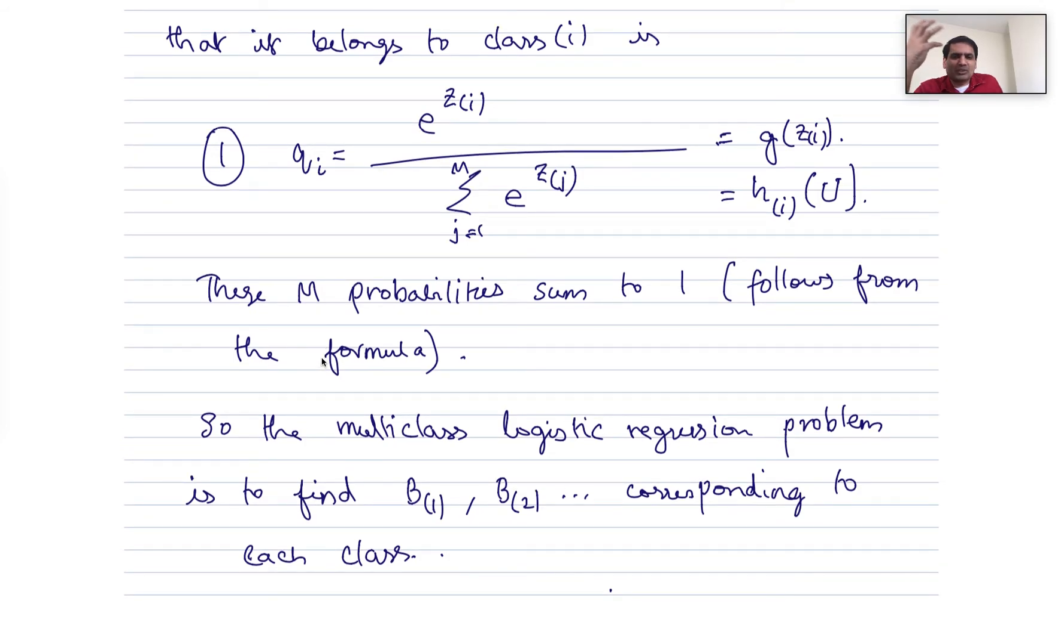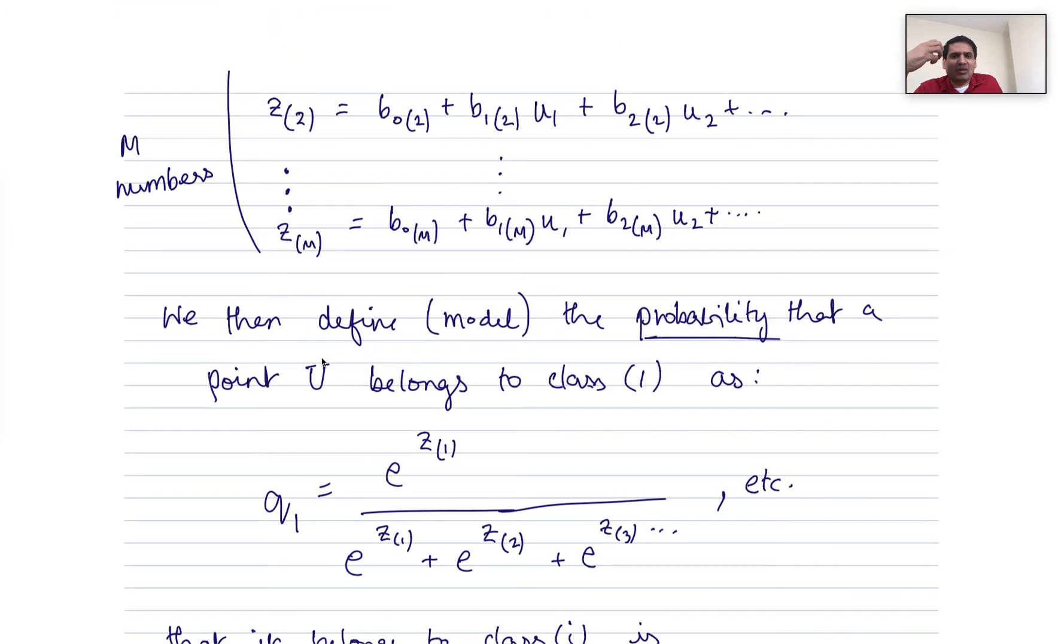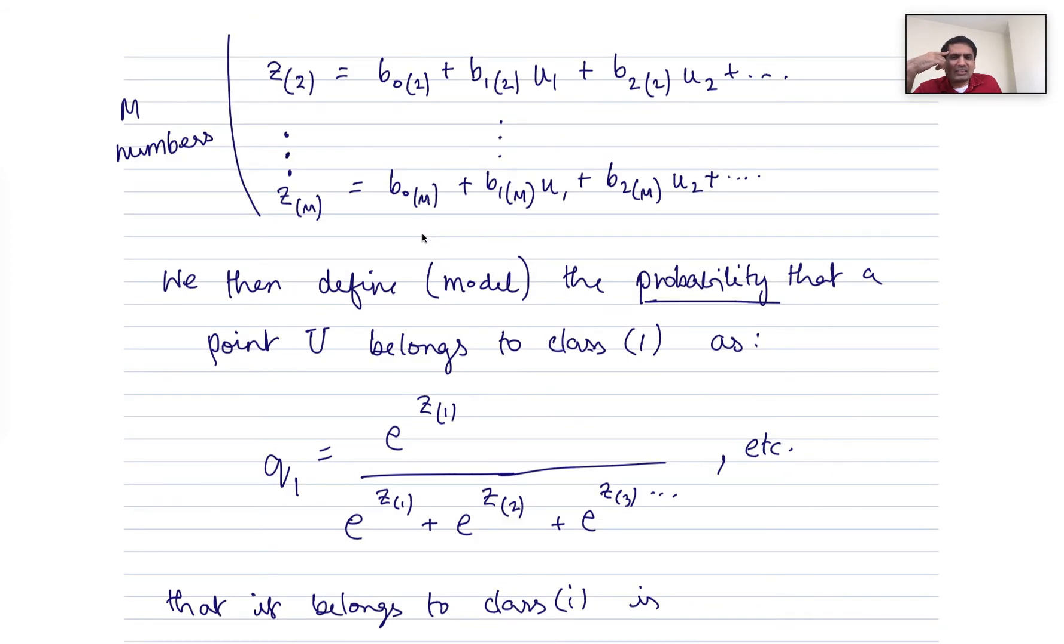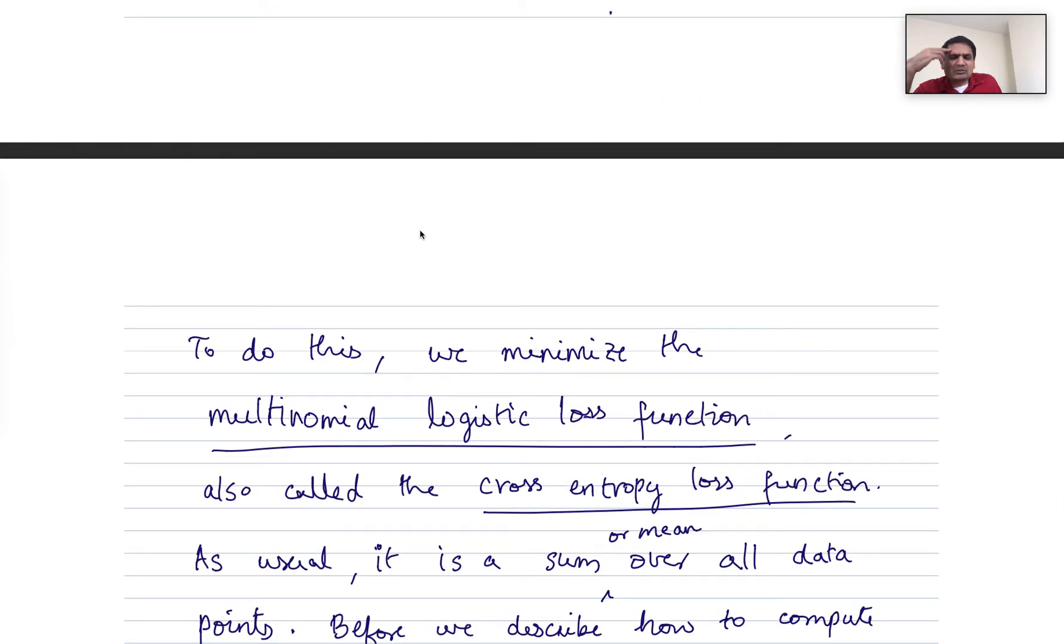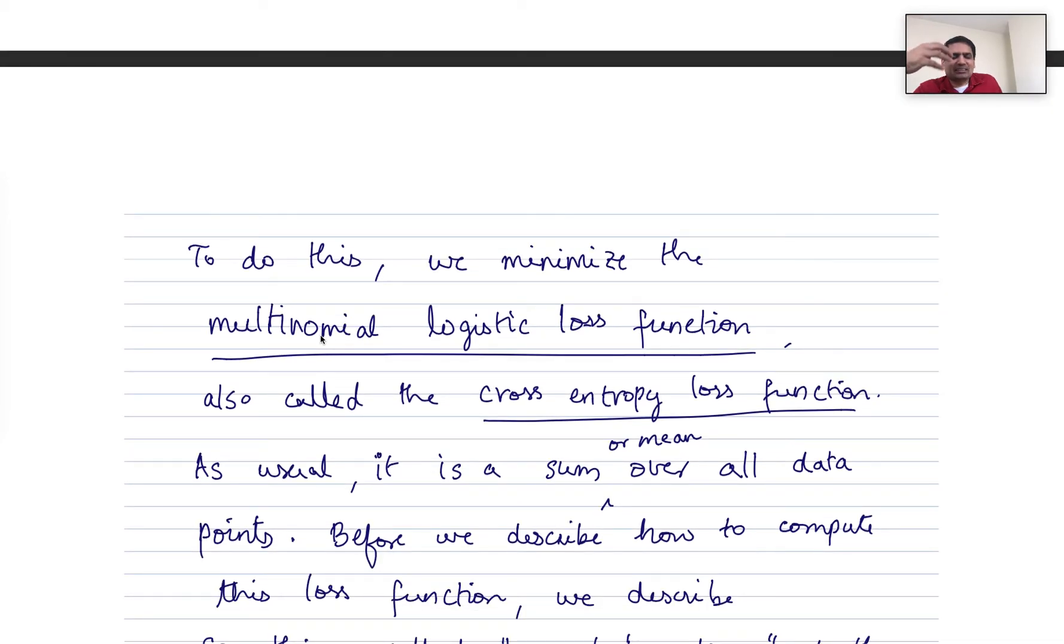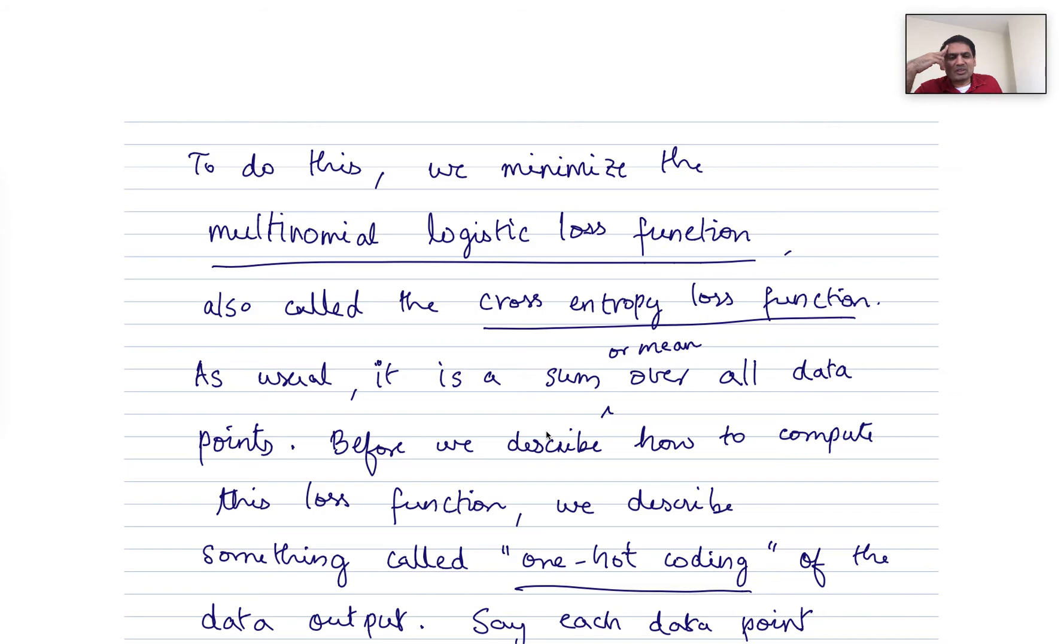So now the problem reduces to finding all these coefficients, b0, b1, b2, etc., for each of the classes. So we have lots of unknowns. To do this, we have to solve an optimization problem. And we essentially have a generalization of the logistic loss function, which is sometimes called the multinomial logistic loss function, or the cross-entropy loss function. Again, it's got a few different terms.